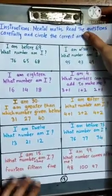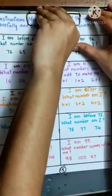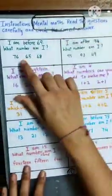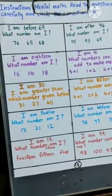First we have to read the question, then we have to look at the options. After that we are going to circle the correct number or the answer.